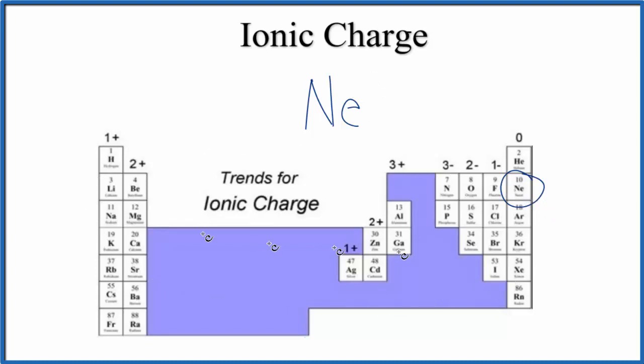You can see other trends here: group 1 has a 1+ ionic charge, group 2 has 2+. We skip over the transition metals, then we have 3-, 2-, 1-. This is a useful trend to memorize.